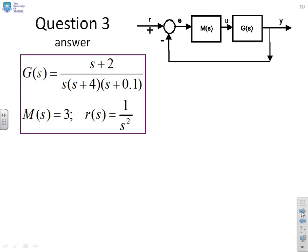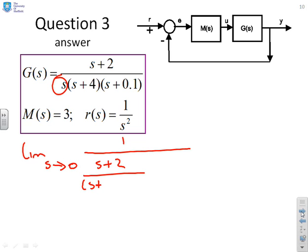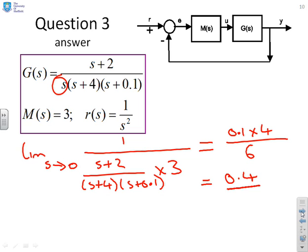Next question. Again, you'll notice the single integrator, so I'm going to jump straight into the formula that we derived on the previous two slides. So I've got to get the limit as s goes to zero of one over (s+2) over (s+4)(s+0.1), and that will be times three. And then as I let s go to zero, what will this give me? It will give me 0.1 times four on top divided by six there or 0.4 over six.